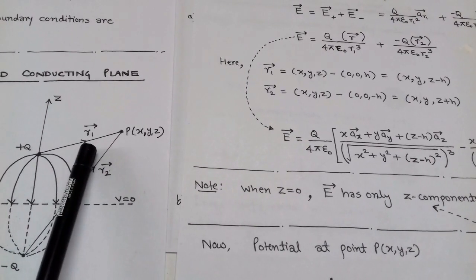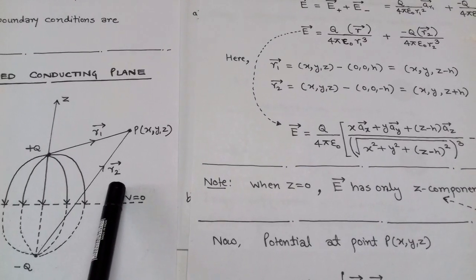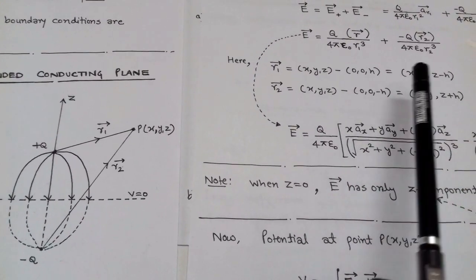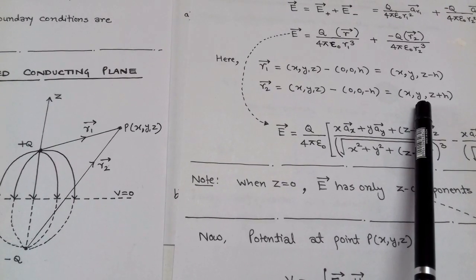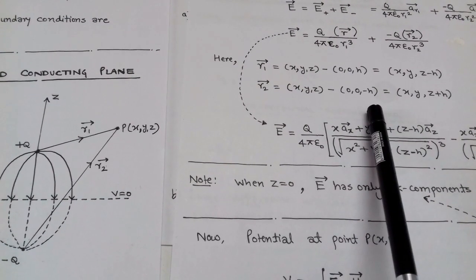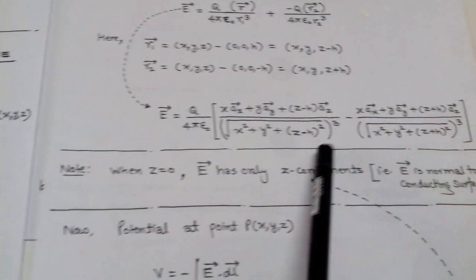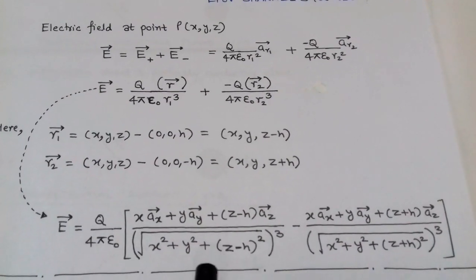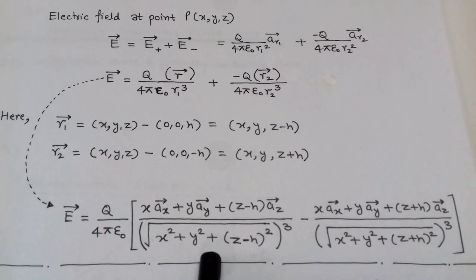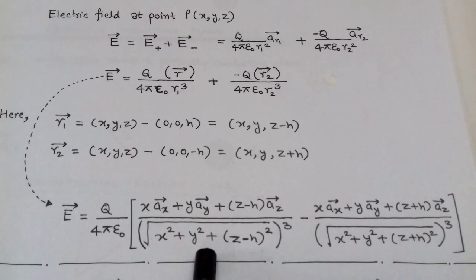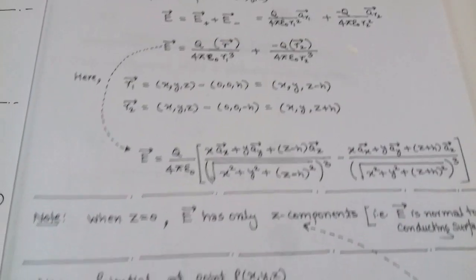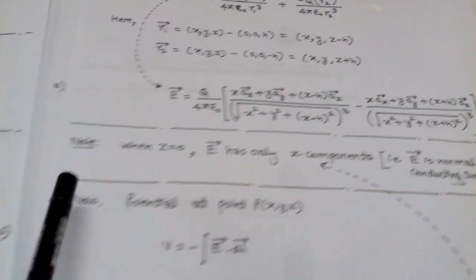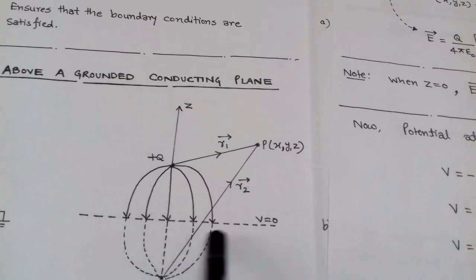Distance vectors r1 and r2 have the following coordinates: r1 = (x, y, z − h) and r2 = (x, y, z + h). After substituting r1 and r2 into the electric field equation, we obtain the resultant expression for the electric field at point P due to the point charge using the method of images. When z = 0, i.e., on the equipotential surface, the electric field E has only a z-component.